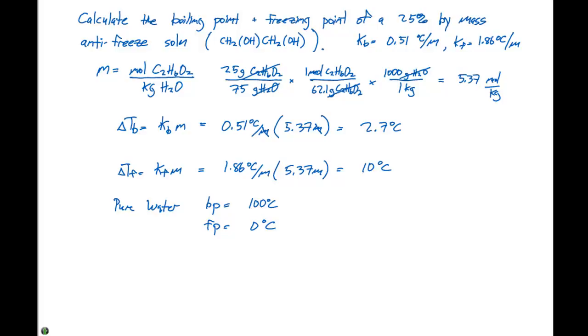Remember when we look at our colligative properties, we have a boiling point elevation and a freezing point depression. So when we look at this change in temperature, we need to add the value, which in this case is 2.7 degrees Celsius, to the 100 degrees Celsius. So our new boiling point is going to be 102.7 degrees Celsius.